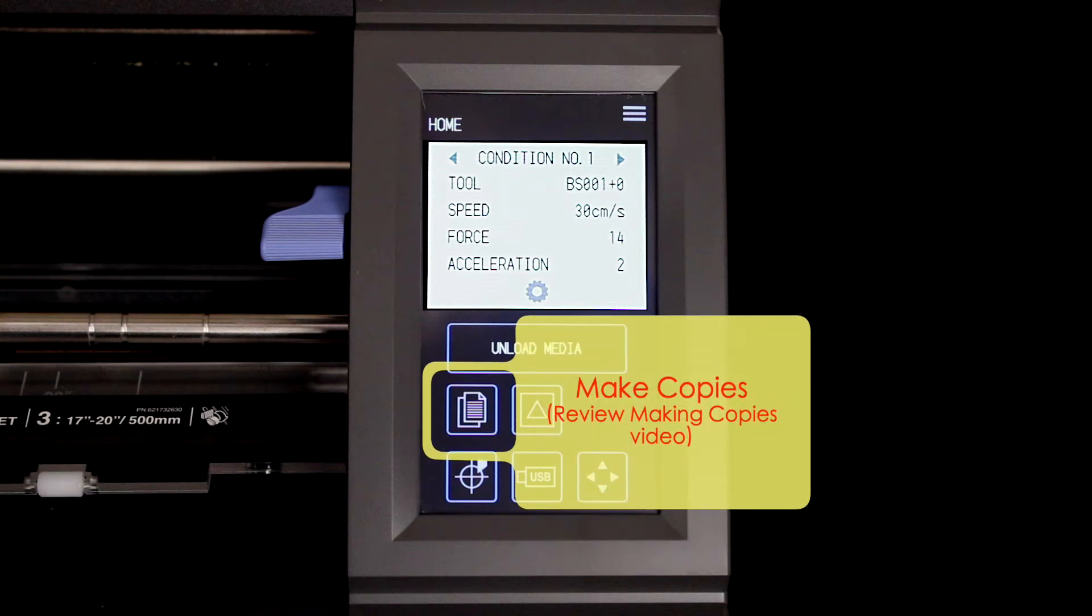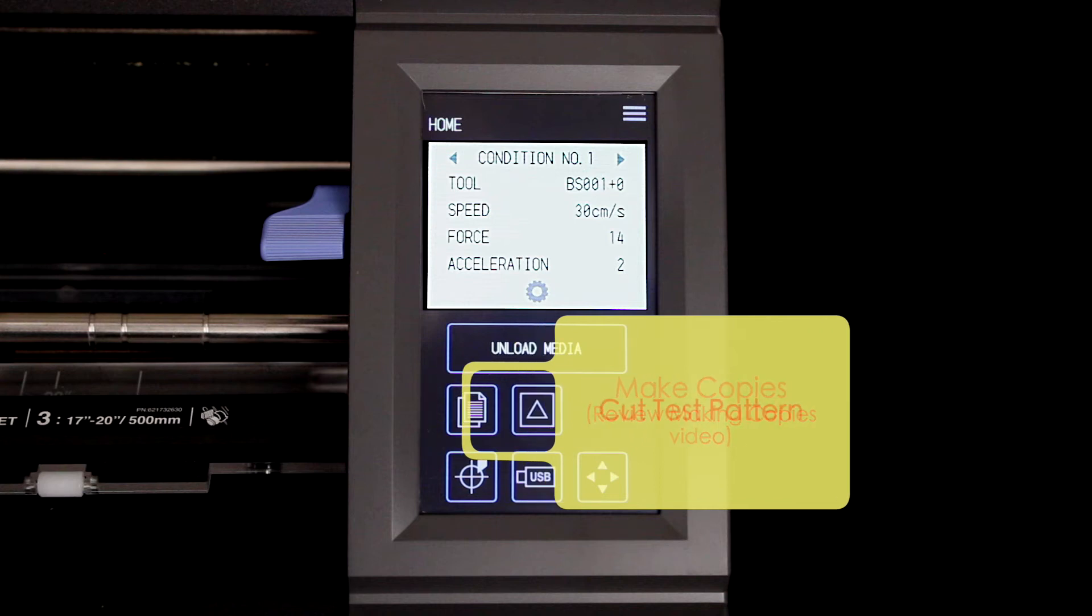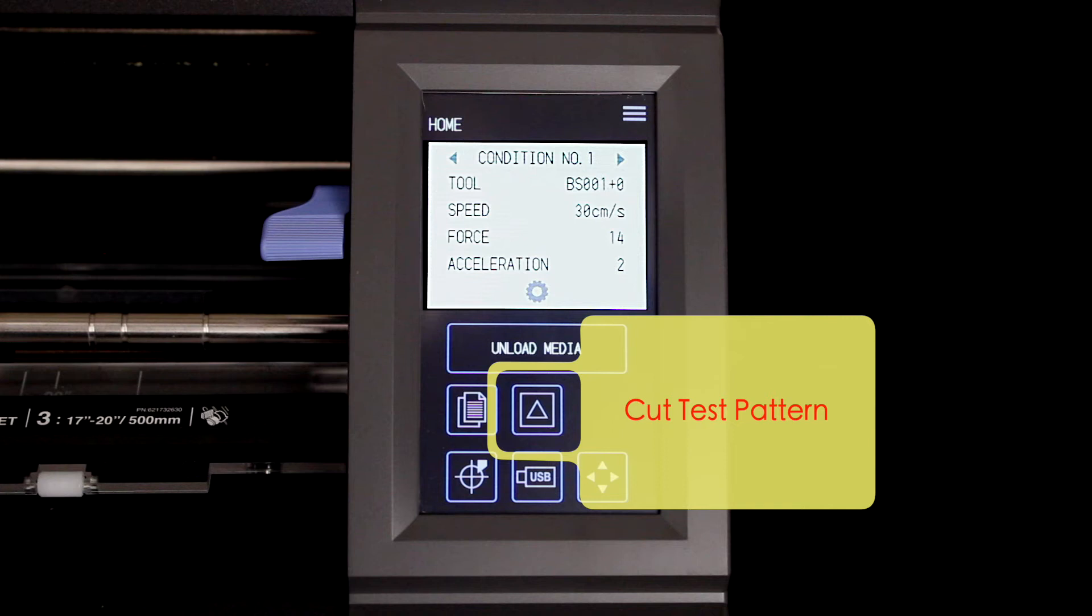This next button opens the copy menu when you want to make copies of a design that has been cut. This button will cut a test pattern in the form of a square and a triangle, and it's used when adjusting the blade settings.